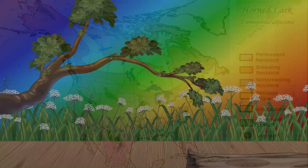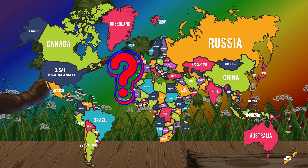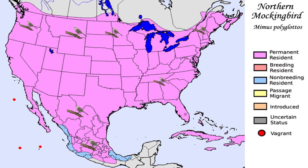M for mockingbird. Where is the mockingbird found? Northern mockingbirds live across the United States and in parts of Canada and Mexico. The mockingbird is the state bird of Arkansas, Florida, Mississippi, Tennessee and Texas. They are commonly found on tall shrubs or tree branches on the edges of forests, in backyards or in parks.